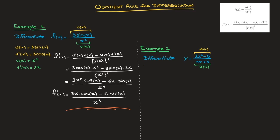We know that u of x equals 2x squared minus 5, and therefore u dash of x will equal 4x. We also know that v of x equals 3x plus 4, and its derivative v dash of x will just be equal to 3.